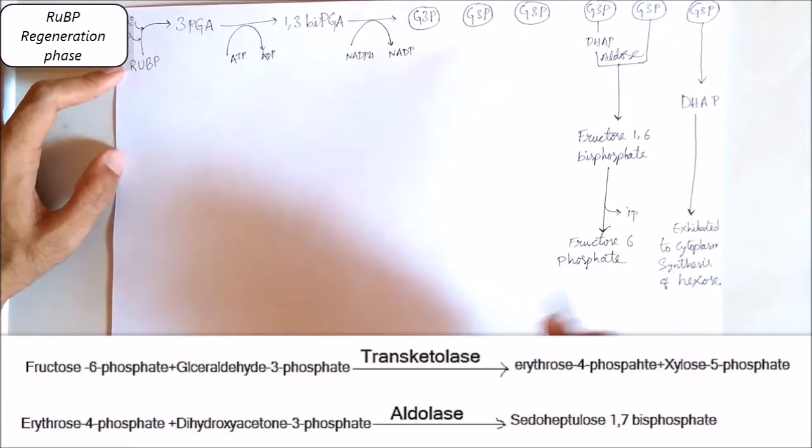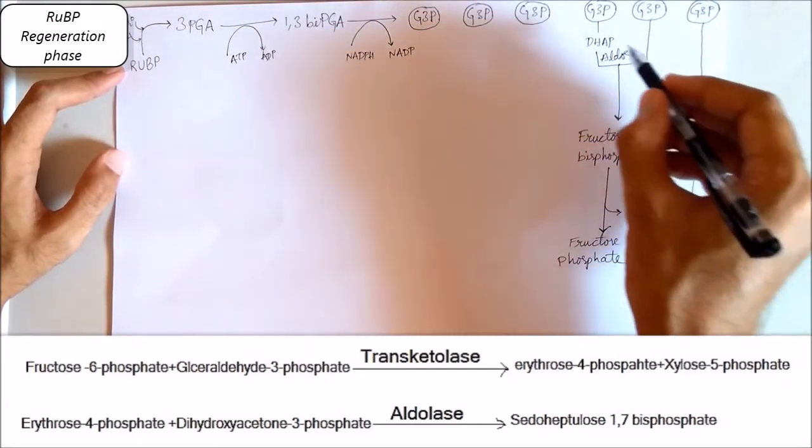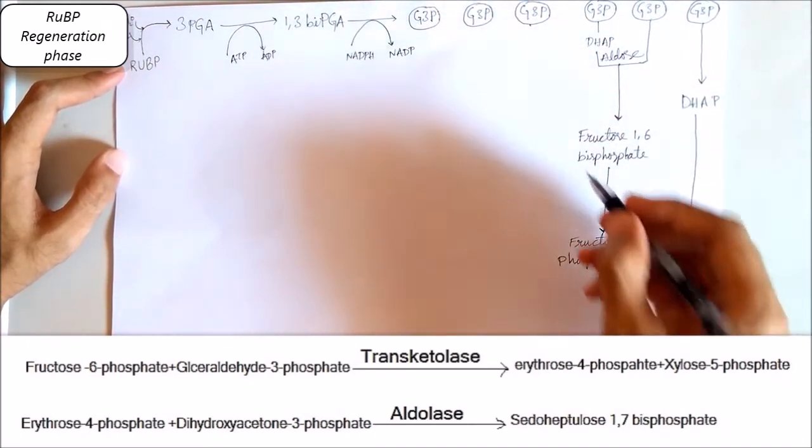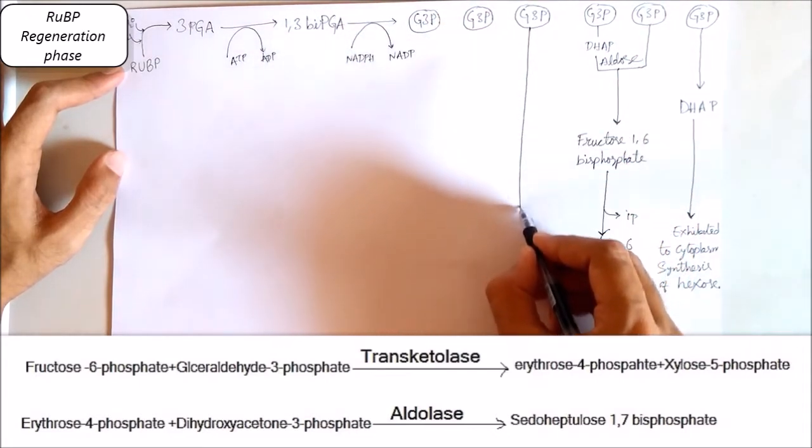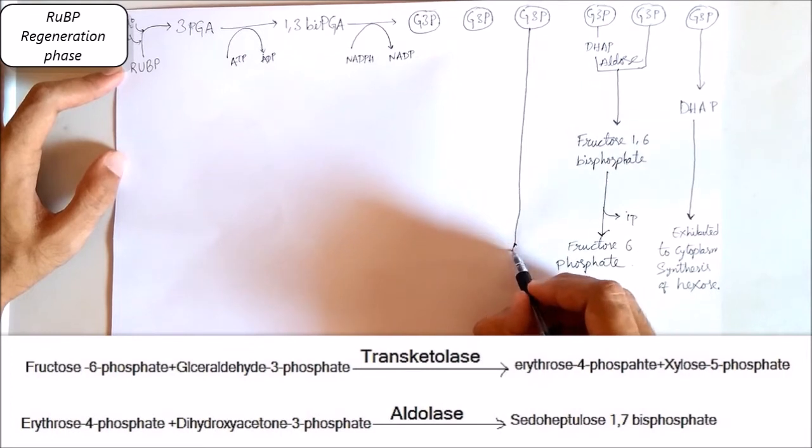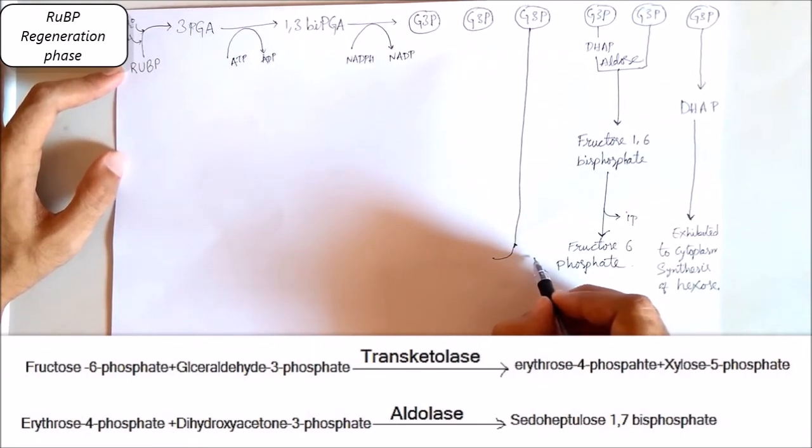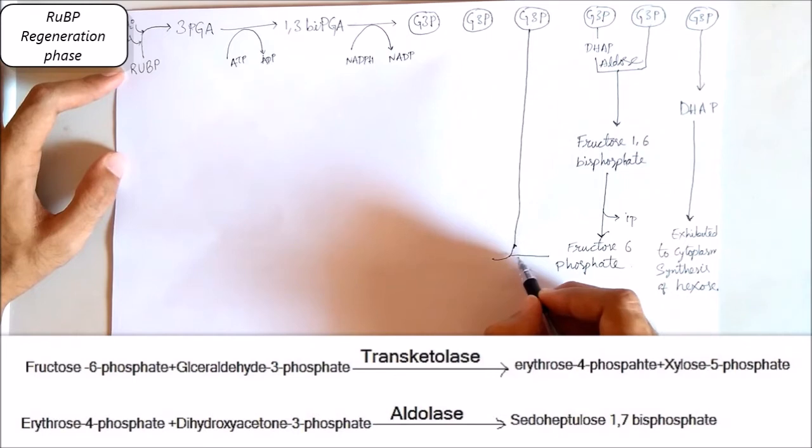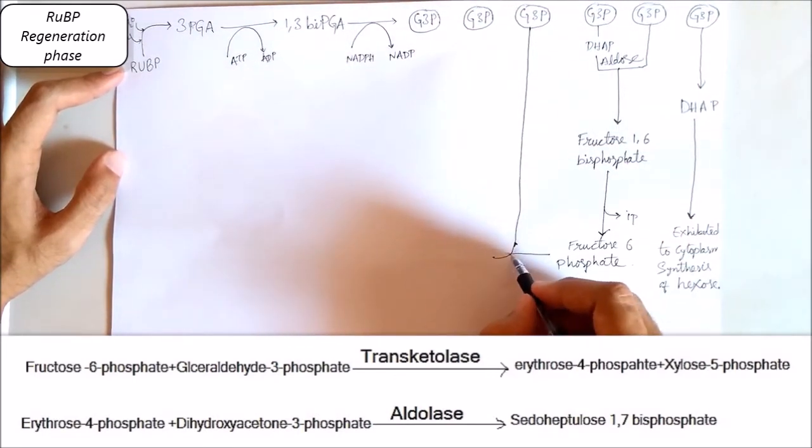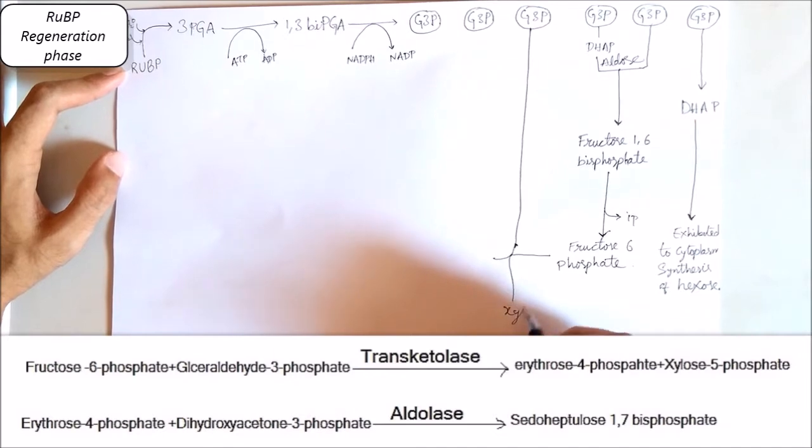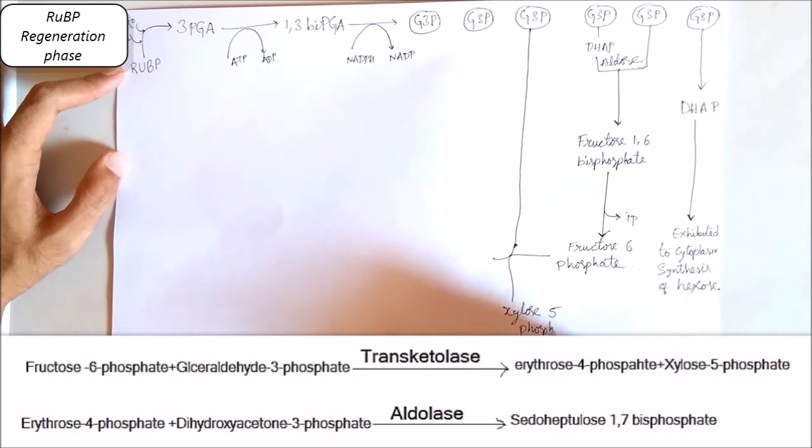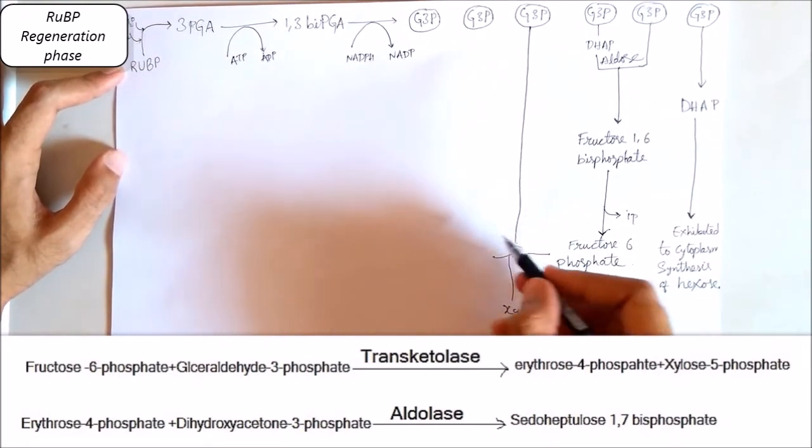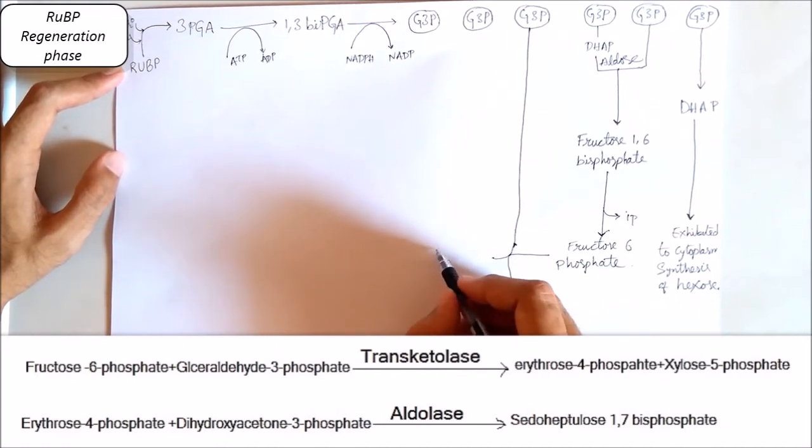And this cycle will be like that. And here, this transketolase gives erythrose-4-phosphate where fructose is combined with this and glyceraldehyde 3-phosphate. This liberates xylulose-5-phosphate.